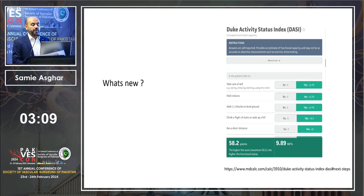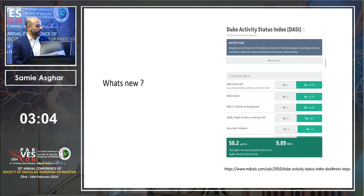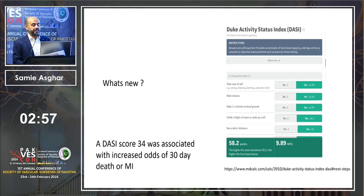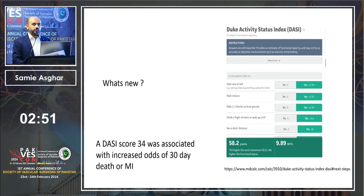There is also the Duke Activity Status Index, available online — a self-reported scale where you add values for activities like: can you take care of yourself, walk indoors, walk on level ground? If the score is less than 34, there is an increased risk of 30-day death or MI after surgery.